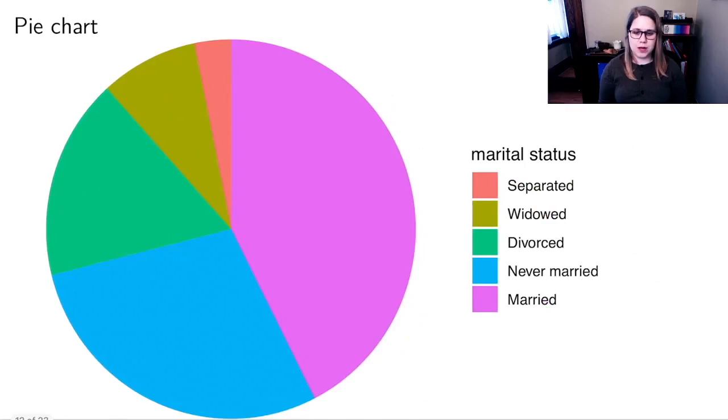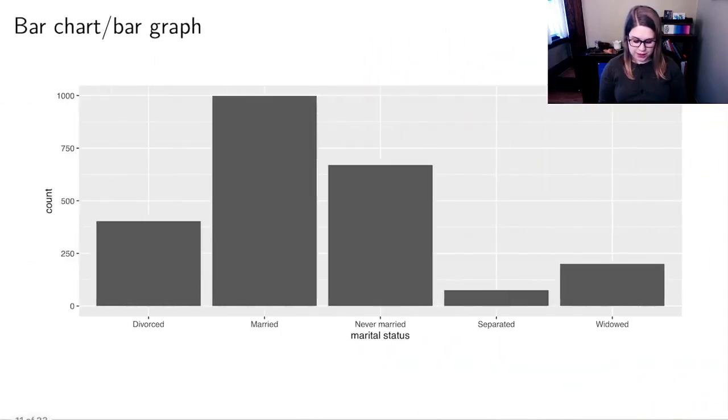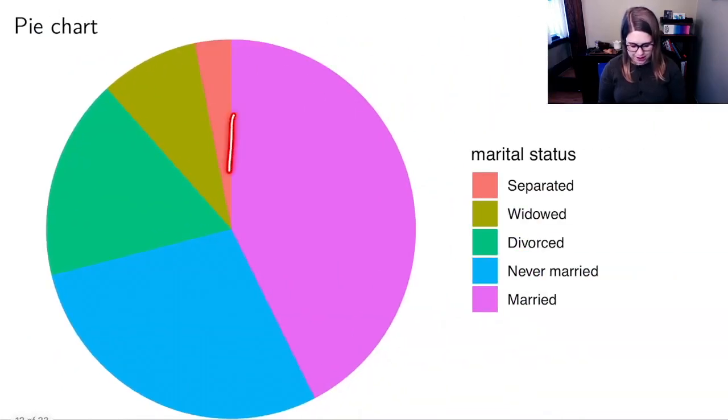Another way that you could visualize one categorical variable is a pie chart. And so this one, instead of mapping to the height of a bar, we're going to map to the angle, the percent of the whole. So we can see that married is almost half, if it was half, it would be half of the circle, it's not quite there. We can see that never married is about a quarter of the circle, etc. So we could estimate those percentages here.